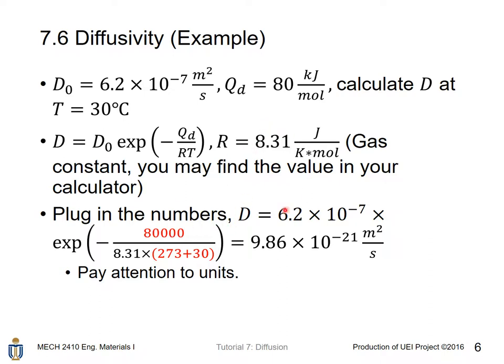Plug in the numbers, and we get D equals D₀ times e to the power -80,000 J per mole over gas constant times temperature in Kelvin scale, not Celsius scale. Therefore, D equals this value. Pay special attention to units.